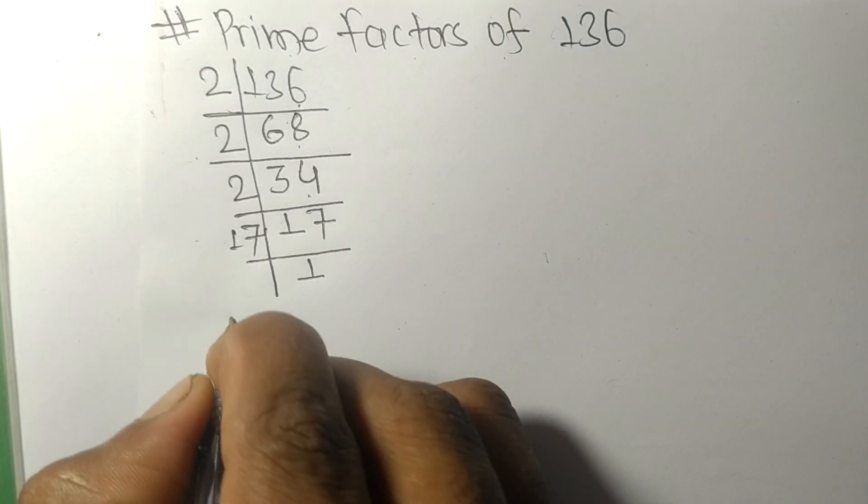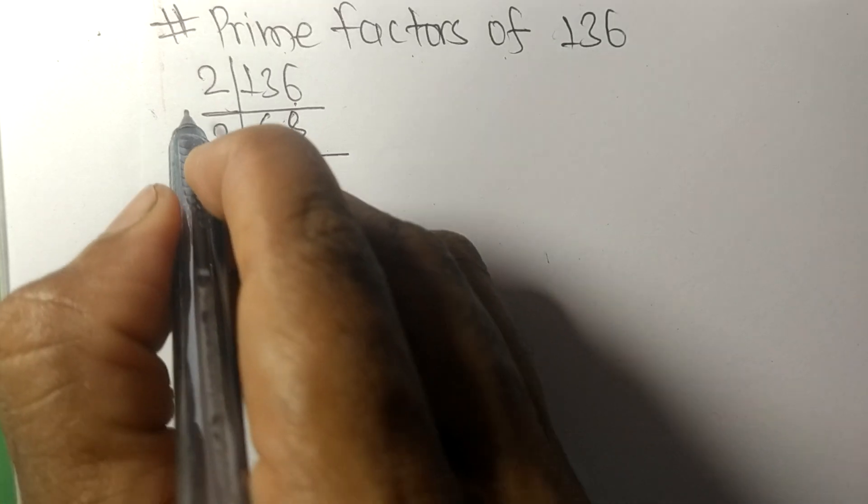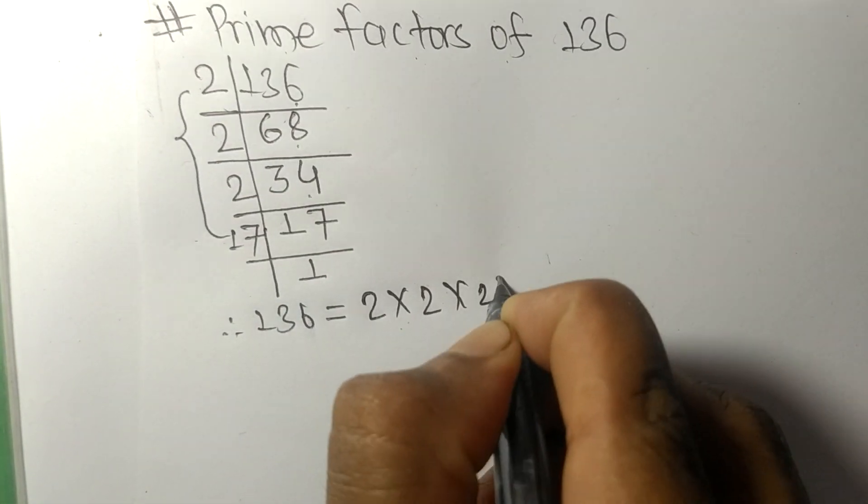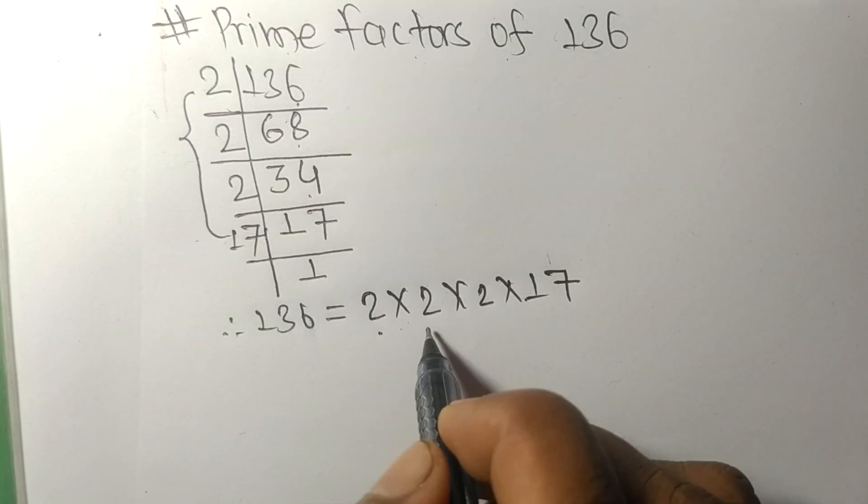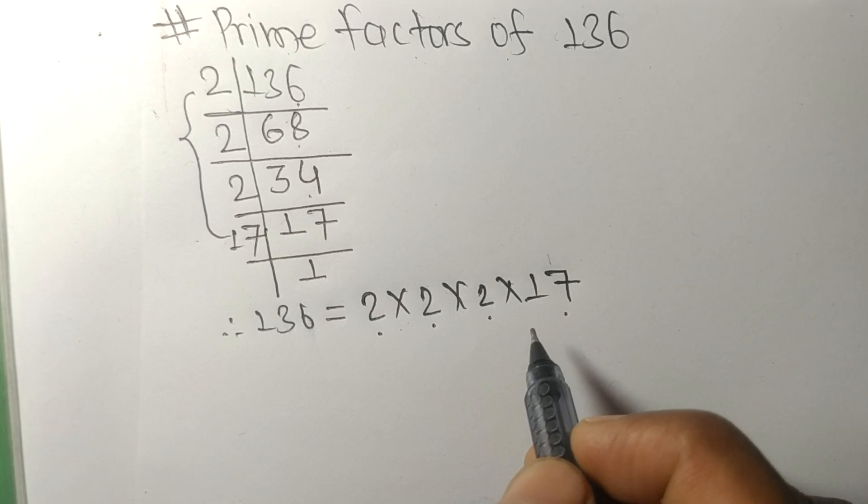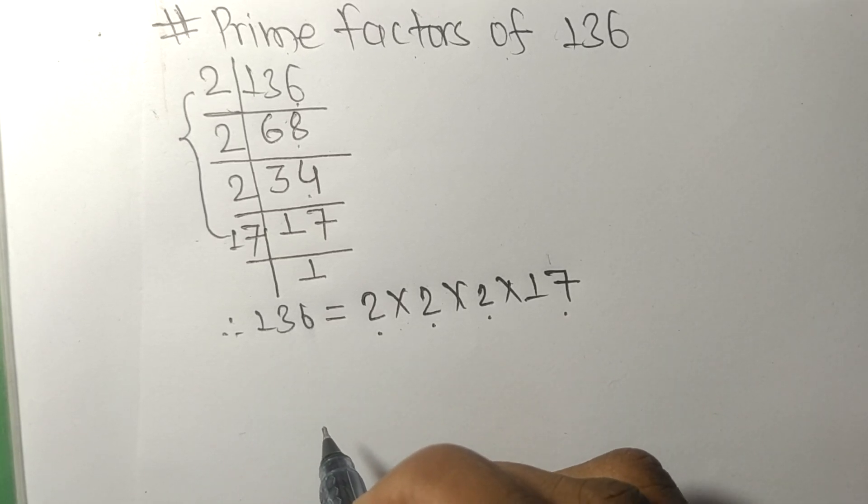So 136 is equal to 2 times 2 times 2 times 17. So 2, 2, 2, and 17 are the prime factors of 136. So this much for today and thanks for watching.